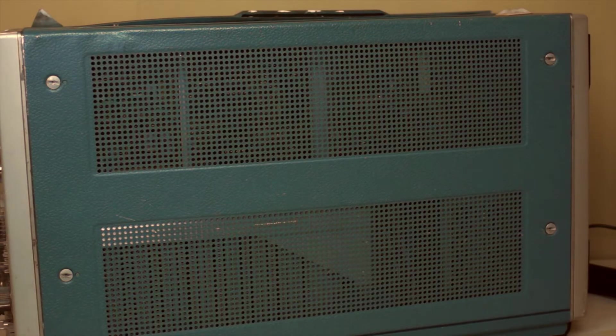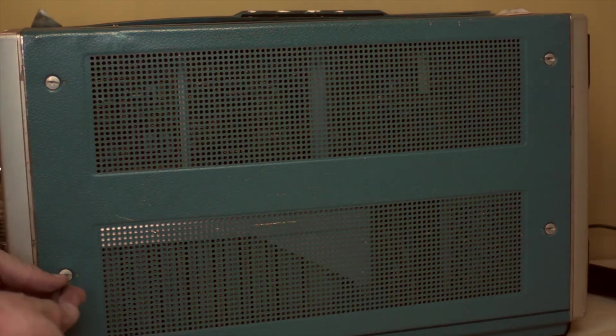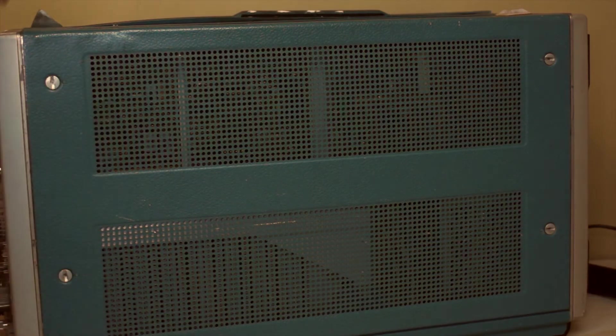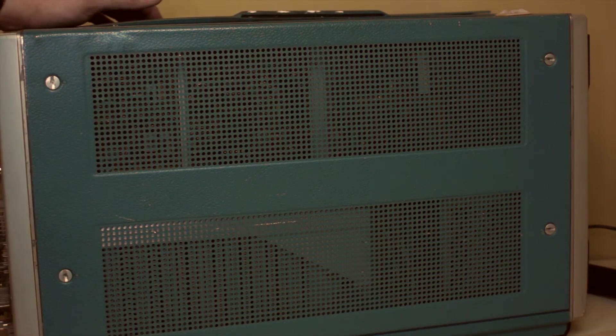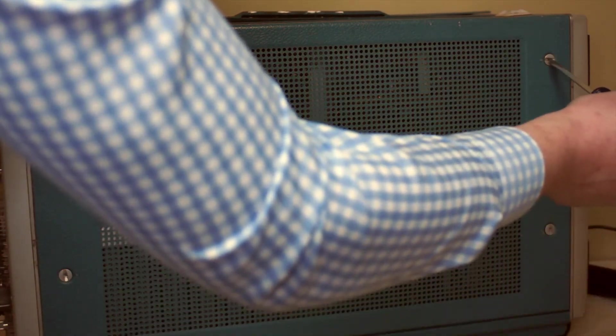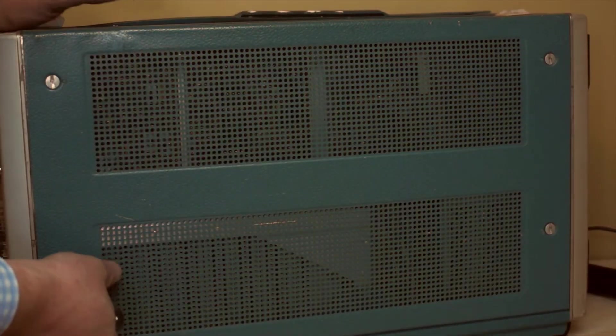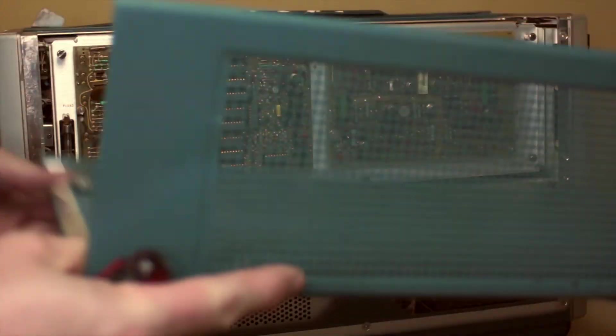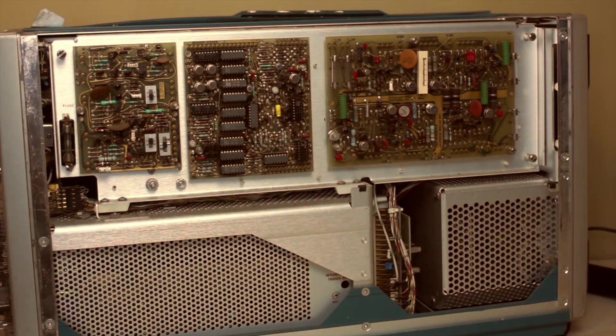These units were from an era where test equipment was definitely meant to be serviced. Let's not hold back and take a look at this thing. There's four screws that turn half a turn to open it up, then each of these side panels comes off and you can see the circuitry inside.